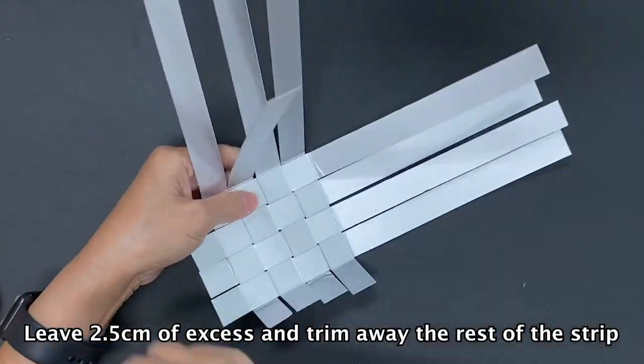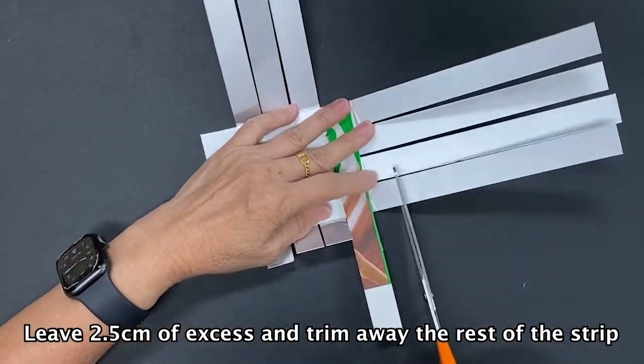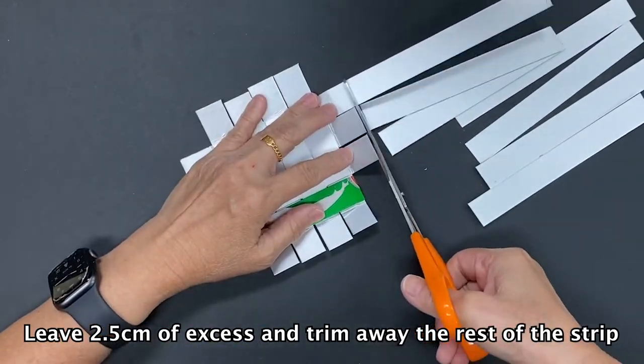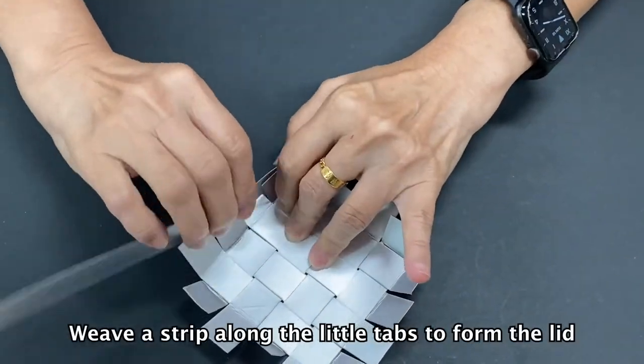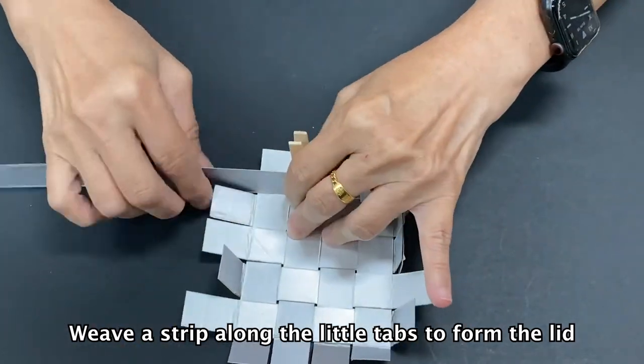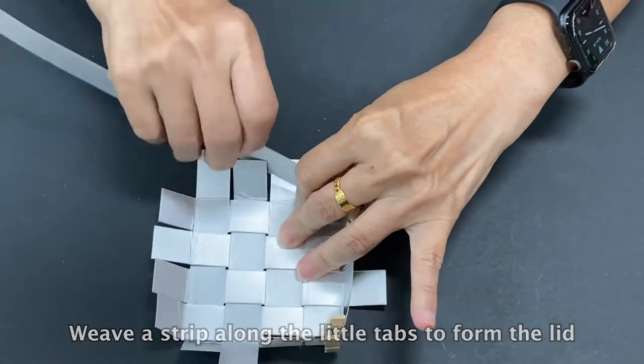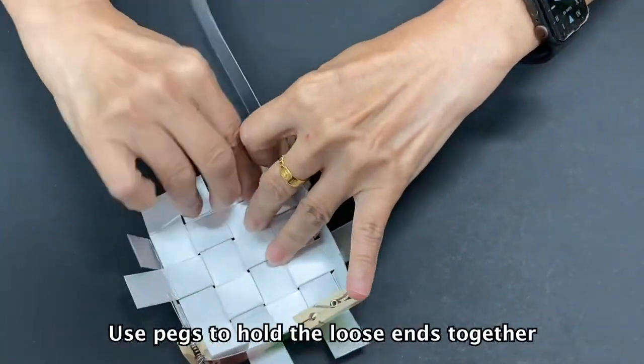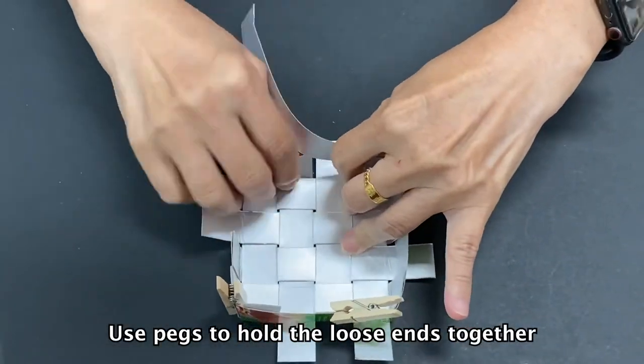Leave 2.5cm of excess and trim away the rest of the strip. Weave a strip along the little tabs to form the lid. Use pegs to hold the loose ends together.